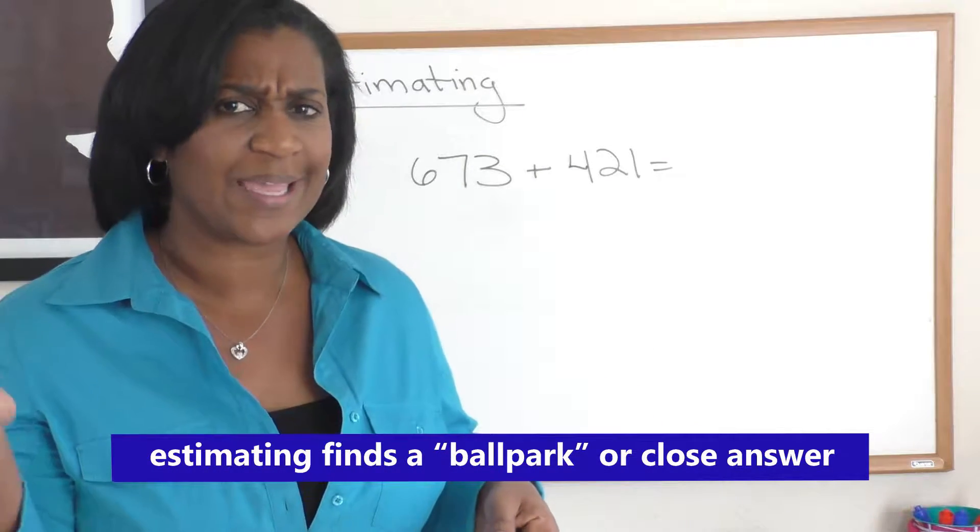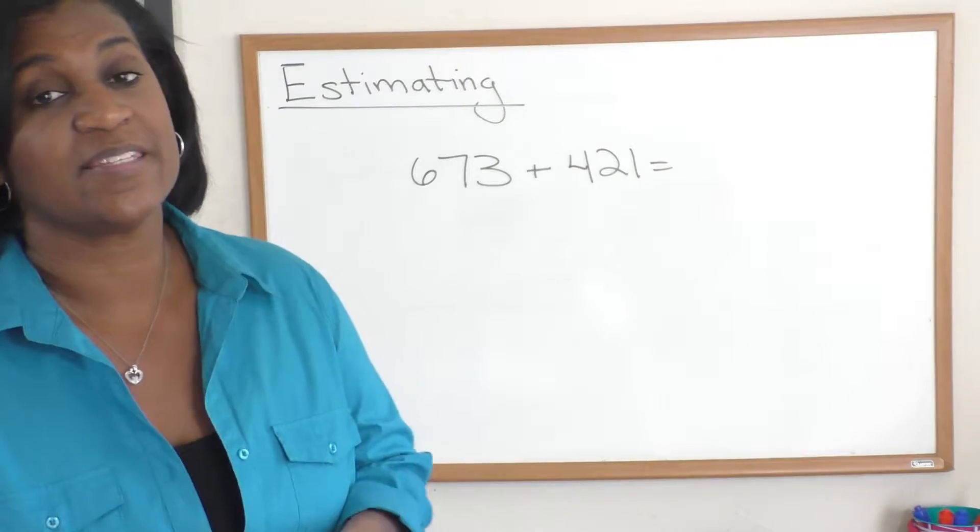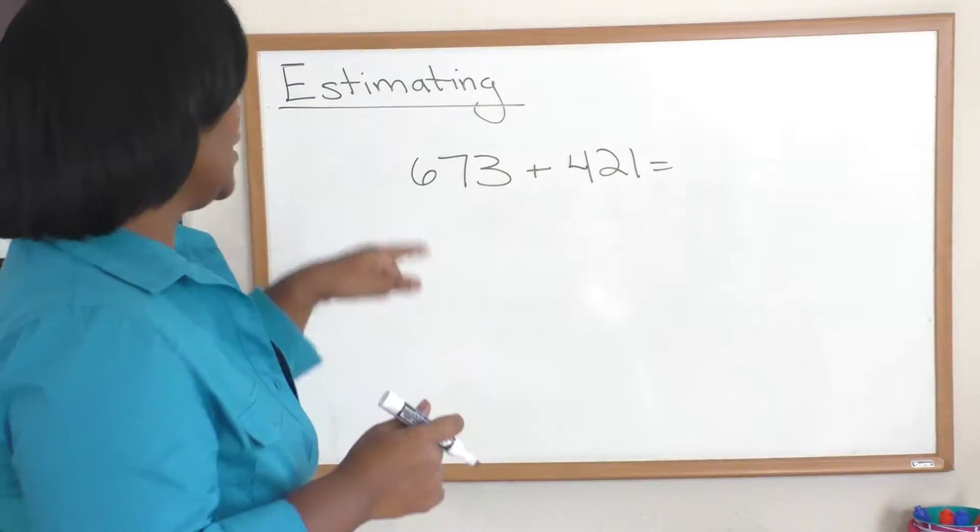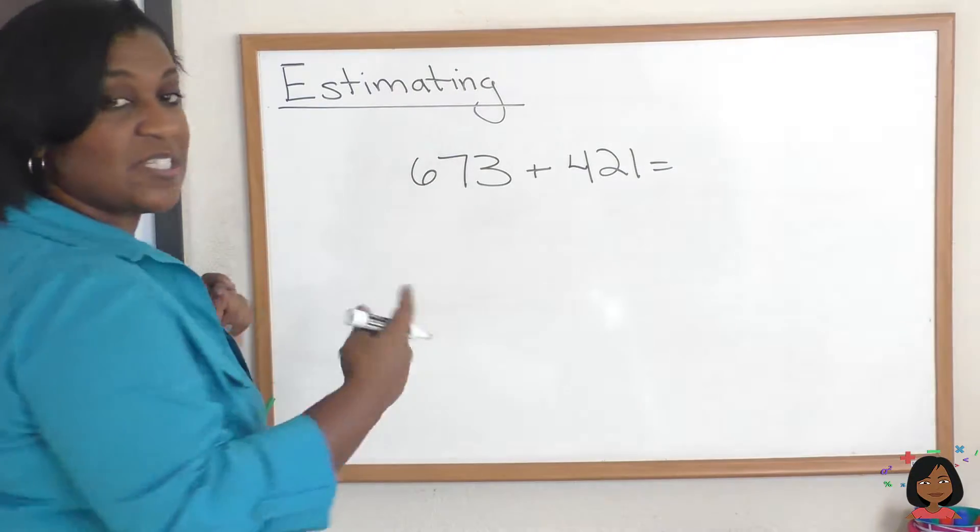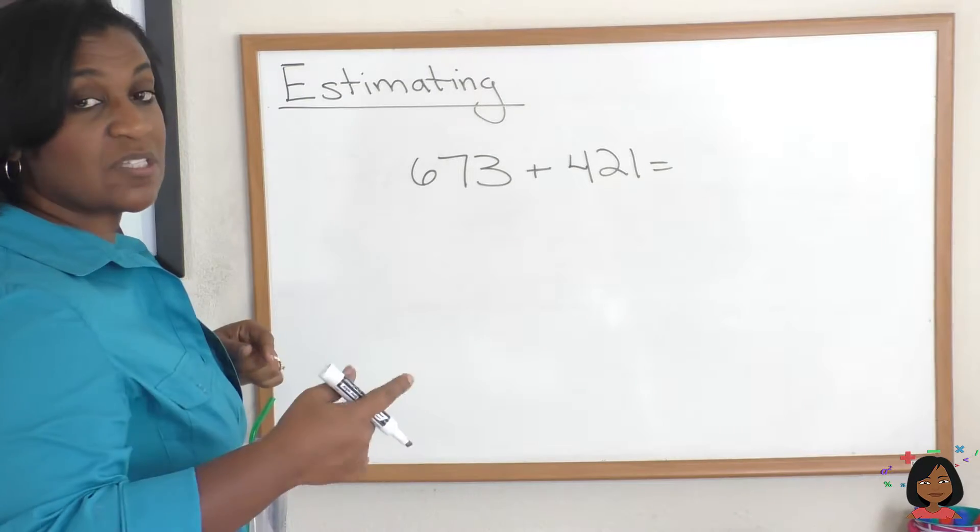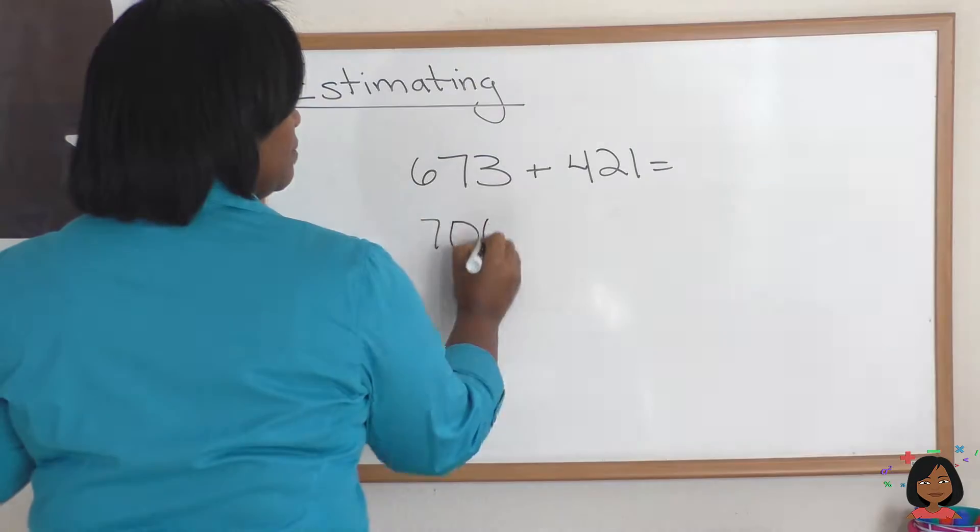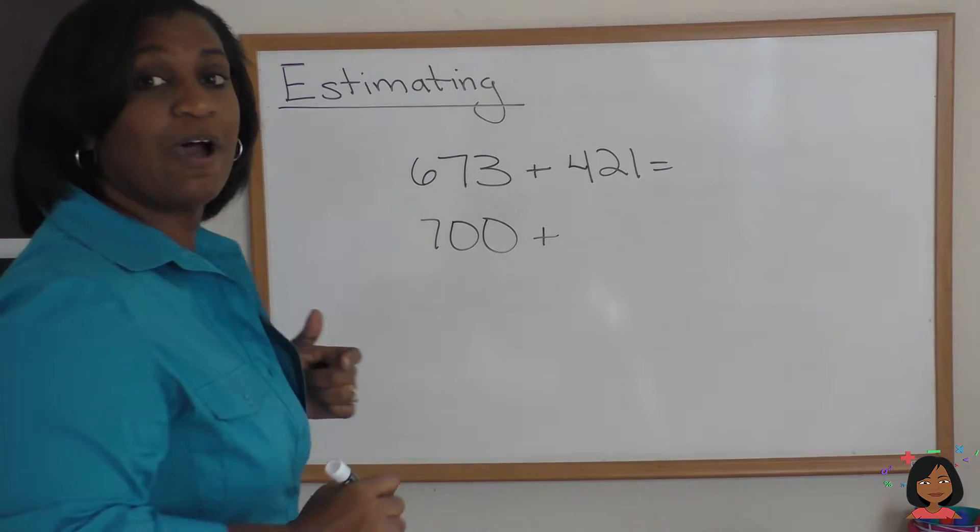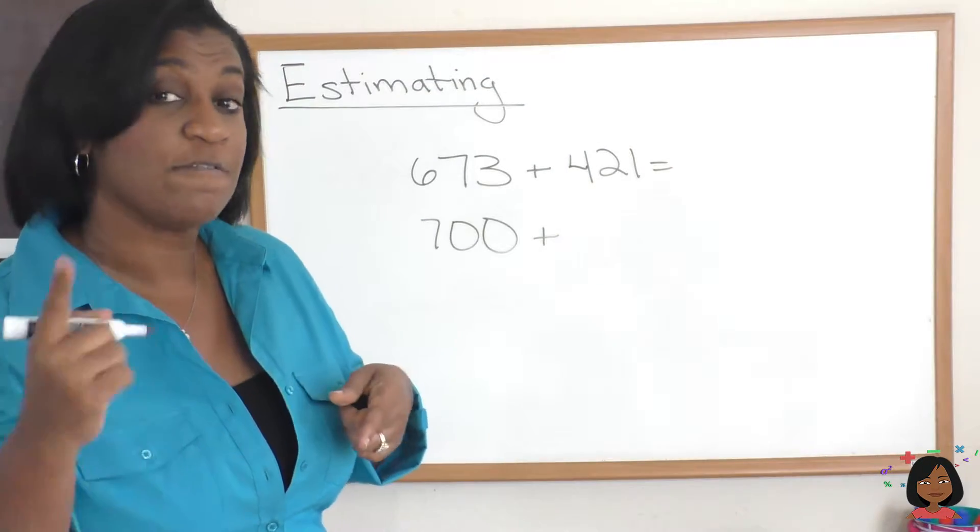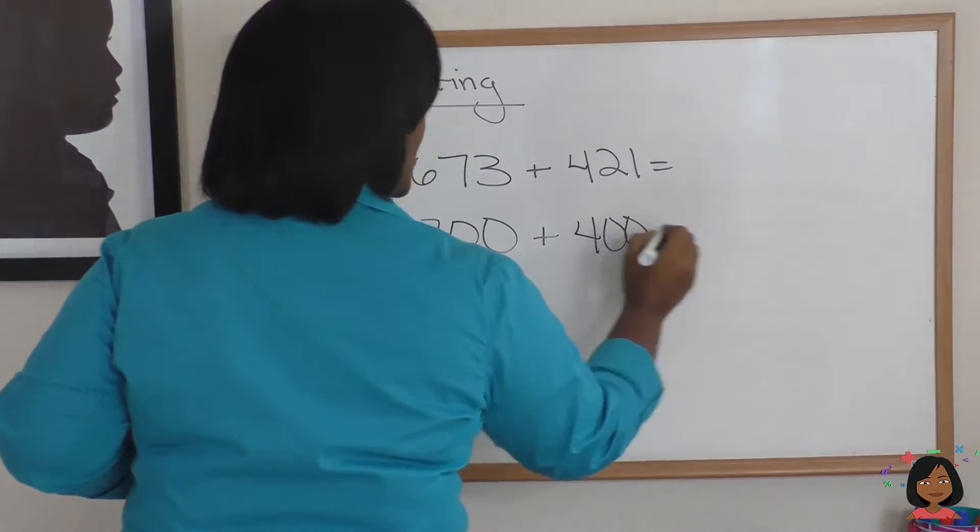So the key here is that we estimate first, then we add. Let's do 673. We're going to estimate this to the hundredths, so 673 we would round to 700. And what about 421? We would round that number to 400. And now we can do our addition.